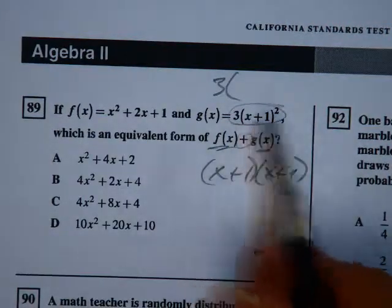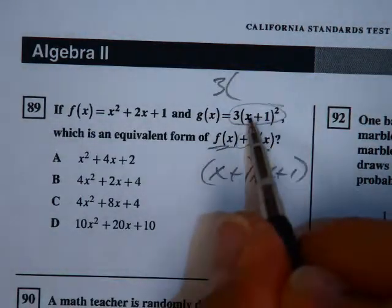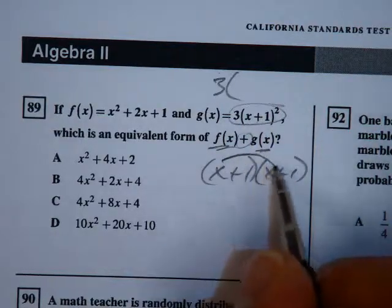You're just distributing a square where you shouldn't. That means the square means multiply this by itself. So that's what we're doing.